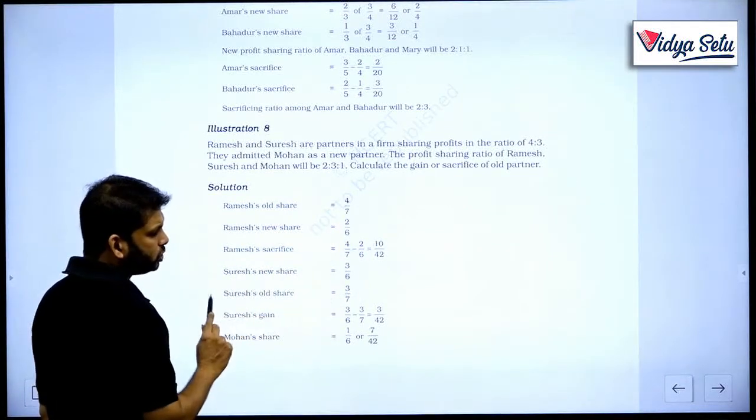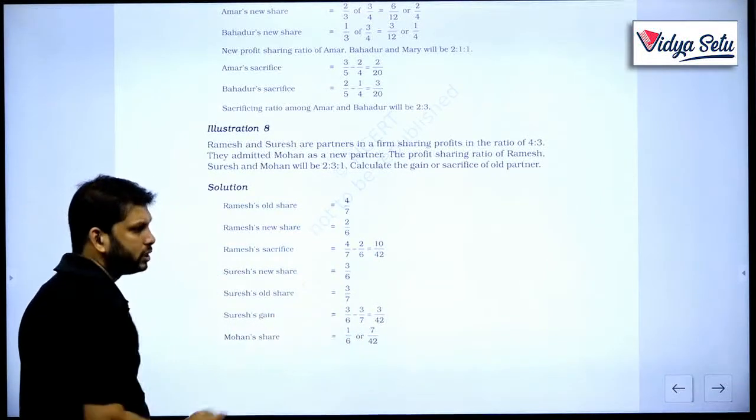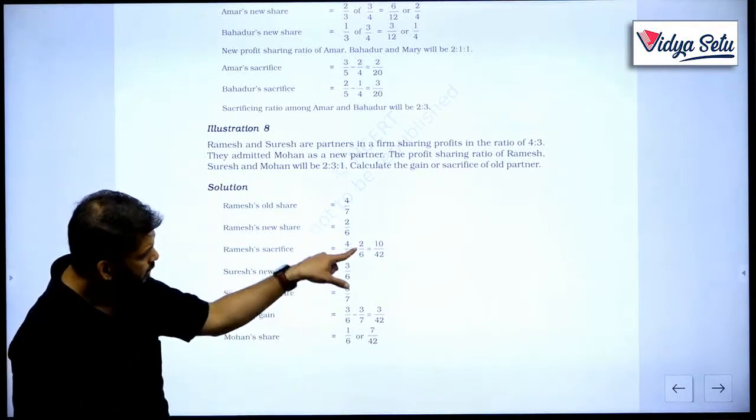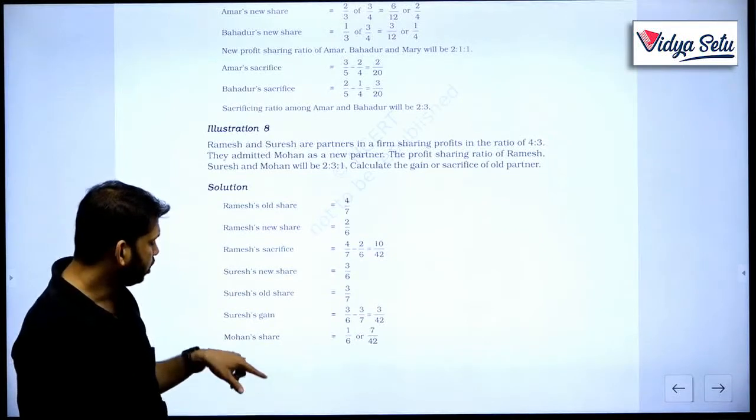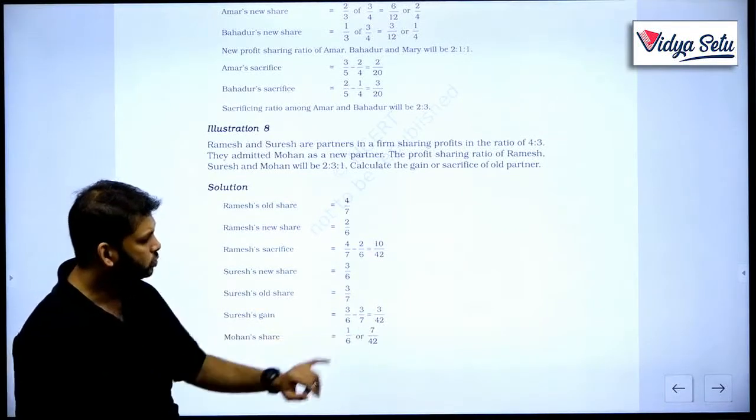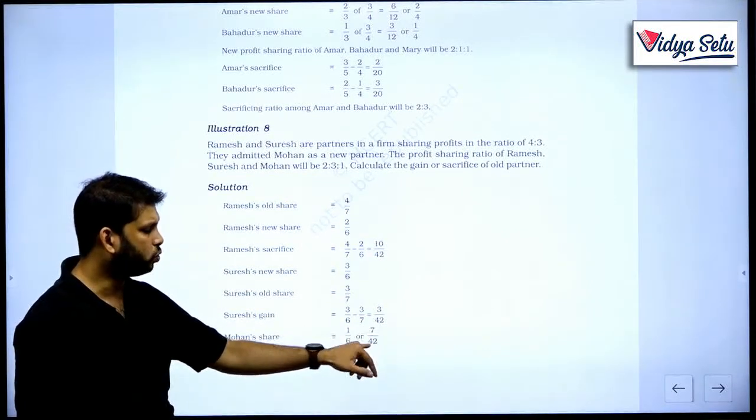Suresh's old share is this, Suresh's new share is this. Again, we can find out his total sacrifice. So 10 upon 42, 3 upon 42. Mohan's share is 1 upon 6. We will also make it in 42 denominator 42.